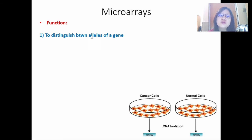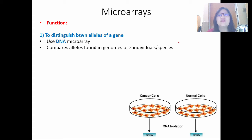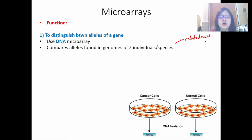For microarrays, one function is to distinguish between alleles of a gene, and to do this you actually use its DNA. Microarray is also quite interesting because it usually needs two different samples. We usually compare alleles found in genomes of two individuals or two species. We take the DNA of individual one and the DNA of individual two, and then we use this technique to compare which allele is the same and which allele is different. So we can figure out the relatedness of those individuals or relatedness between species, usually in an evolutionary context.